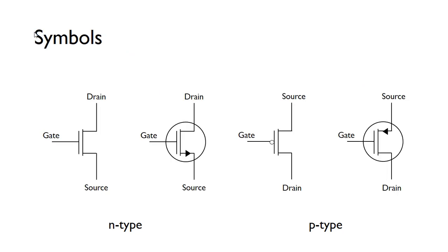These are the common symbols you'll come across. On both the N-type and P-type, the drain and source are on different sides. On the P-type, you sometimes see a small circle on the gate, or alternatively the symbol is drawn with a circle around it. You can tell which type of transistor it is by looking at the direction of the arrow.